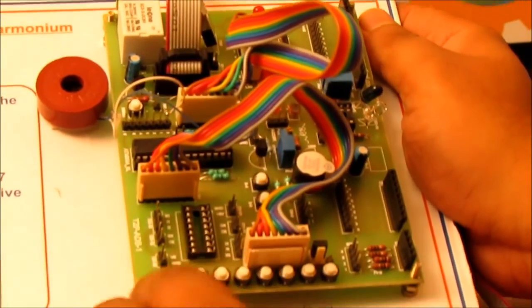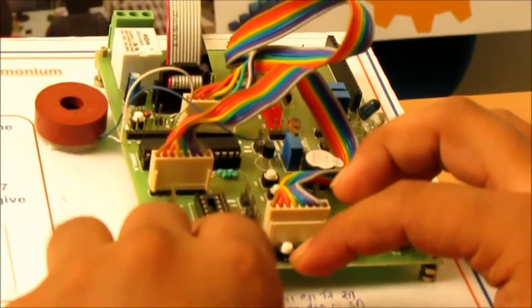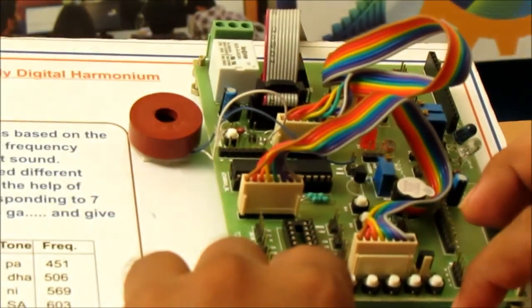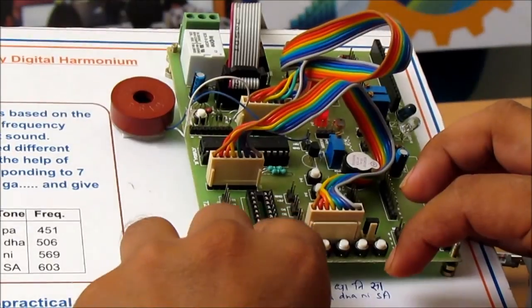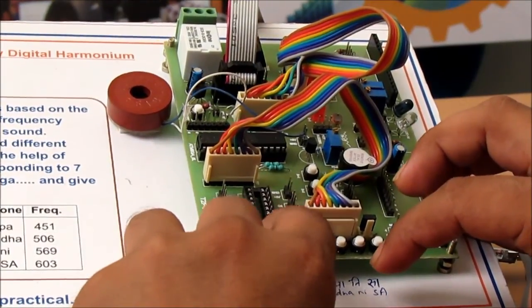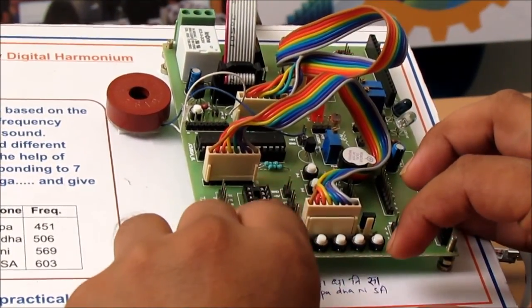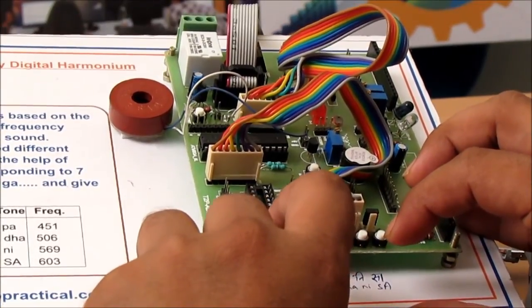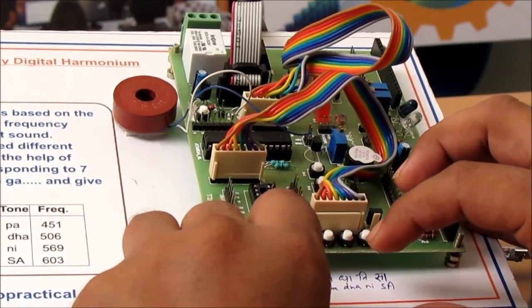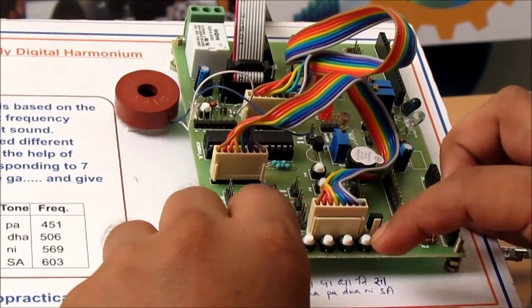Ga ga ga ga re ga ma sa re ga ga ga ga ga re ga ma sa re ga ga ga ga ga re ga ma, then it is ga ga ga ga ga dha re ga re re re ni re sa.